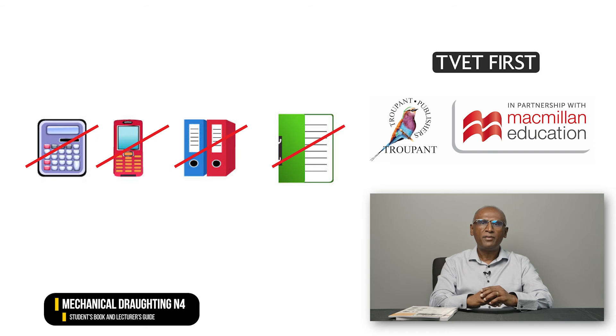The examination for Mechanical Drafting N4 will be a 4-hour paper for 100 marks. It is a closed book exam. Scientific calculators are allowed, but no cell phones, programmable calculators, reference works or any previous exam papers or memoranda will be allowed in the exam venue.